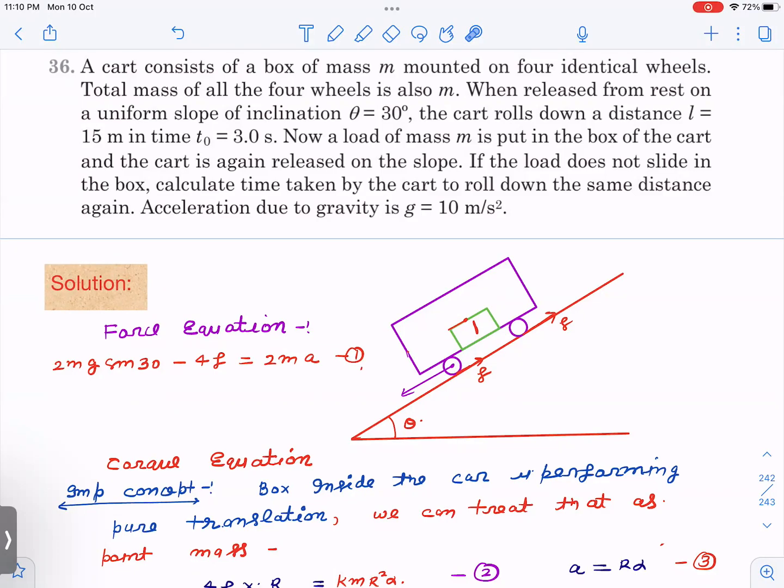This is Build Up Your Understanding question number 36 from the book Pathfinder. The question is: there is a cart consisting of a box of mass m mounted on four identical wheels. The total mass of all four wheels is also m.